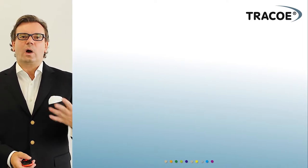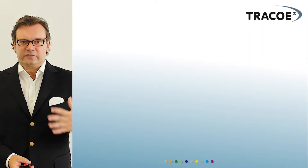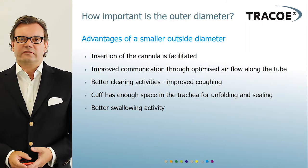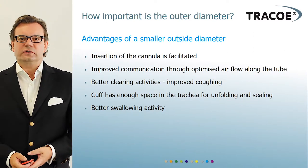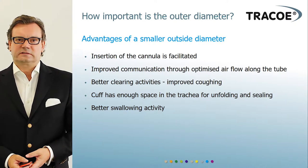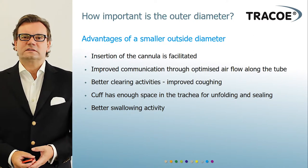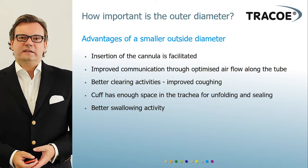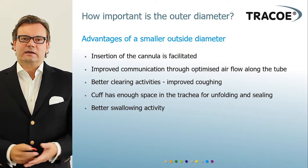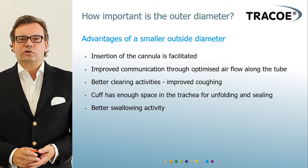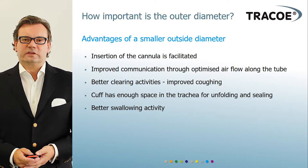This shows how important it is to have the right outer diameter as well. Advantages of a smaller outside diameter include: it is easier to insert the cannula into the patient; it improves communication as airflow alongside the tube is optimized; it makes cleaning easier; and of course it is much easier for the patient to cough. Otherwise, as you heard with the first patient, there may be no airflow at all.